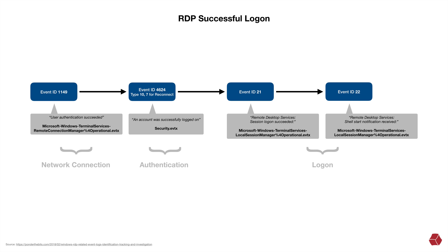Attackers will often try to cover their tracks by clearing event logs, which itself generates an event ID you should be monitoring for in your SIEM. But they'll often forget that, especially with RDP, there are plenty of other logs on the system storing information valuable to investigators. Next, we have event ID 21, Remote Desktop Services Session Logon Succeeded, located in the Microsoft Windows Terminal Services Local Session Manager Operational log — the local operational log. And then event ID 22, Remote Desktop Services Shell Start Notification Received, also in the local operational log.